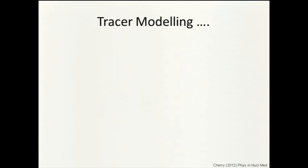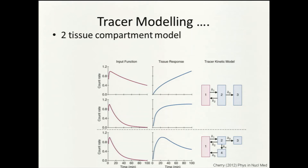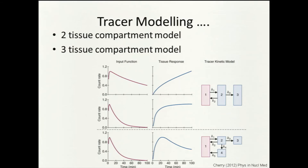Models can get more complicated with two tissue compartments — for instance, a tracer that can go into a reversibly bound state. What's interesting are these K rate constants, which tell us about the biology. To get them we need the tissue information from the PET scanner, but also we need to know what's happening in the blood. We can sample arterial blood to obtain the input function.